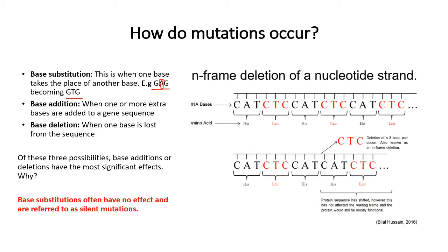You can also have base addition, which is when one or more extra bases are added to a gene sequence, disrupting how that gene sequence is read. These can be very problematic because additions to a base, especially random ones, change the amino acid sequence completely. A base deletion is when a base is lost from the sequence. As you can see in the image, a deletion of CTC somewhere on this template has shortened the gene, and there is a chance that the protein produced might not be as functional as it should be.